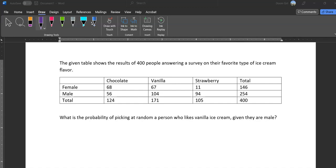Okay, probability of picking a person at random who likes vanilla ice cream given they are male. I'm going to quickly write out what this looks like in our formal notation. We've got the probability of picking someone who likes vanilla, I'm going to abbreviate, given they are male.